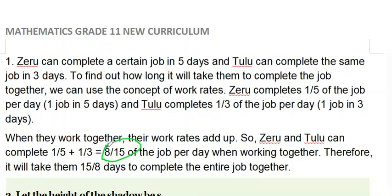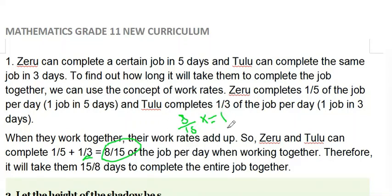So 8 over 15 times x equals 1. Solving for x: x equals 15 over 8. It will take them 15 over 8 days to complete the entire job together.